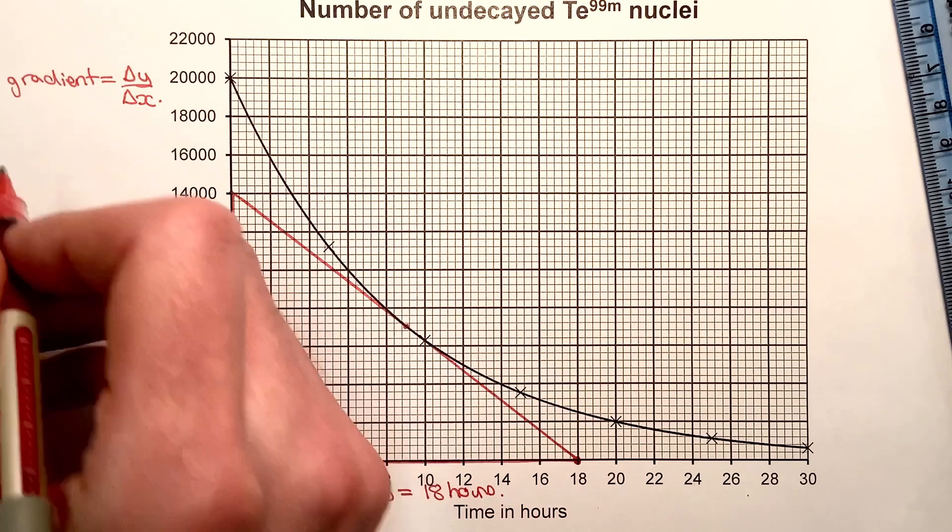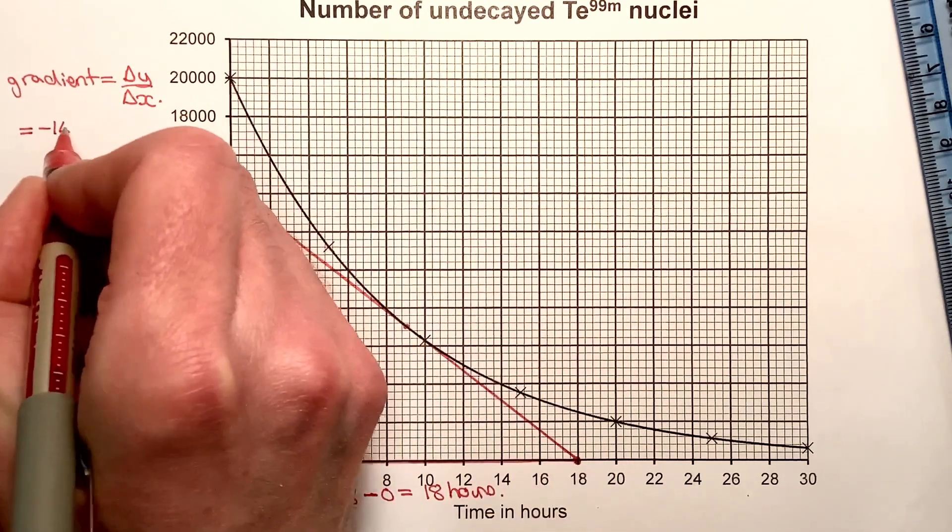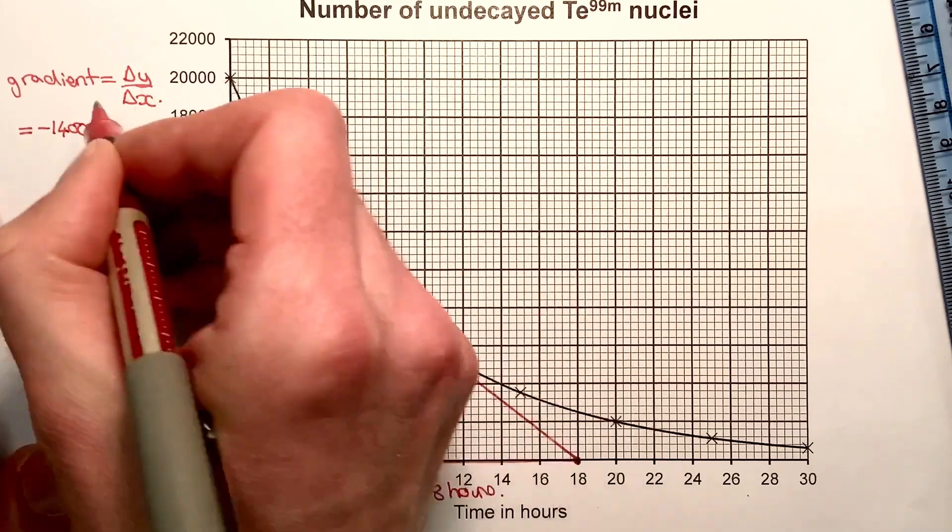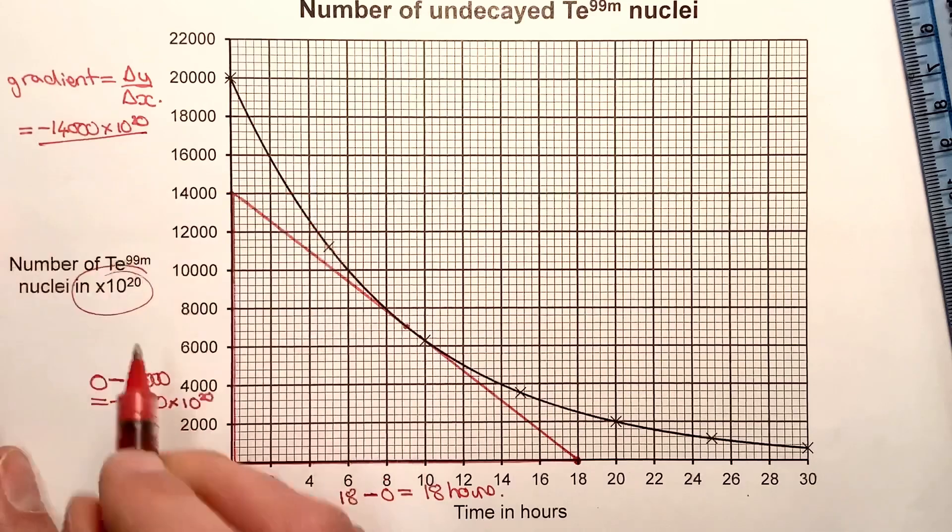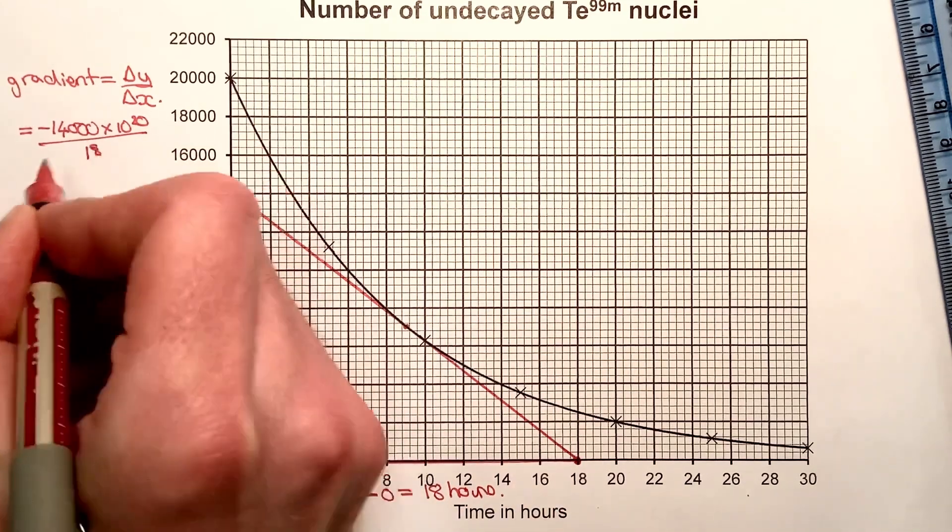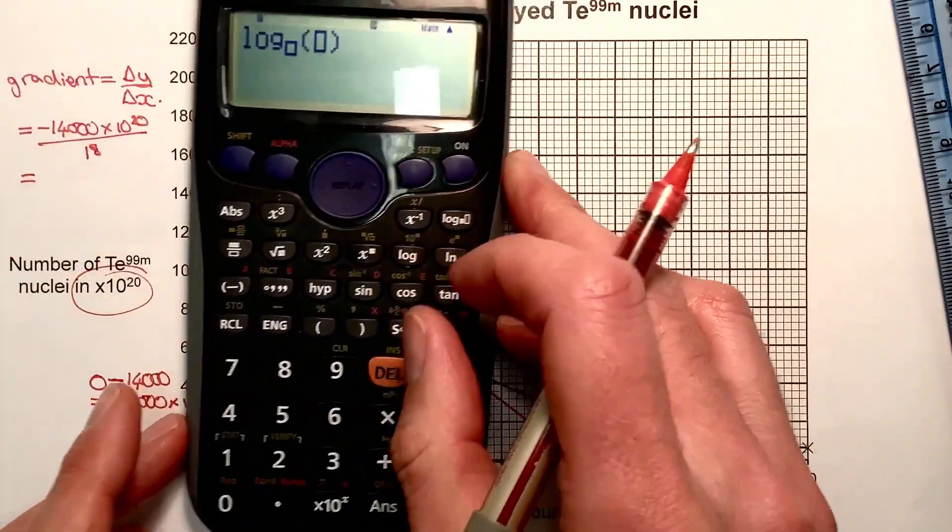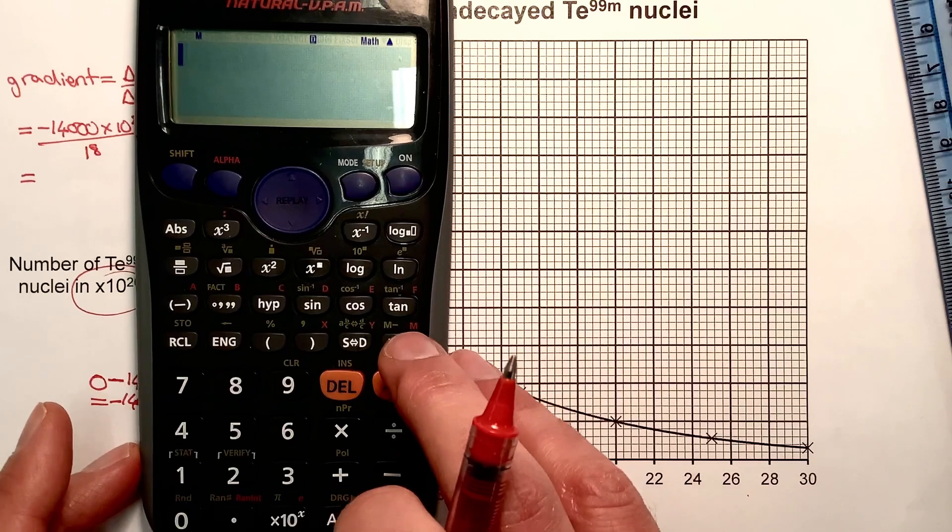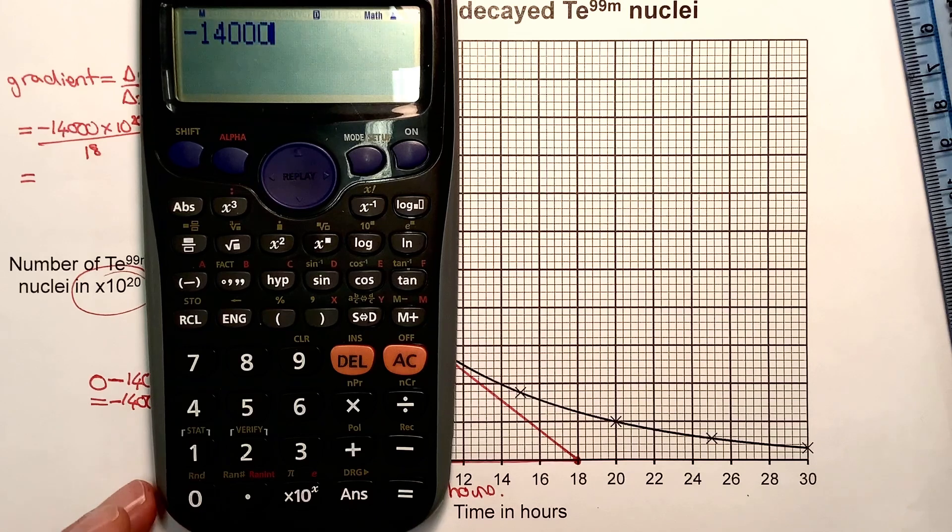Now I'm ready to work out my gradient, which is going to equal minus 14,000 times 10 to the 20, my change in the vertical, divided by my change in the horizontal, which was 18. At this point, I can get my calculator and put in the numbers. I'll do minus 14,000.